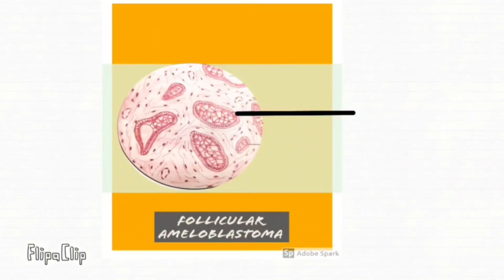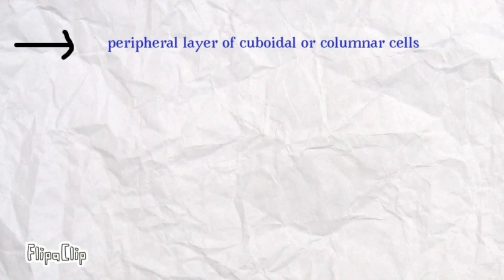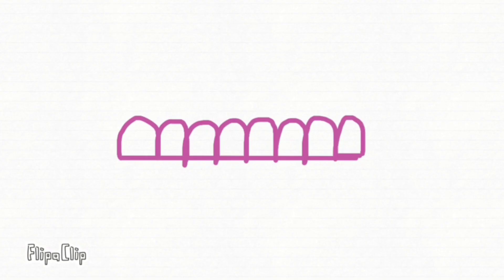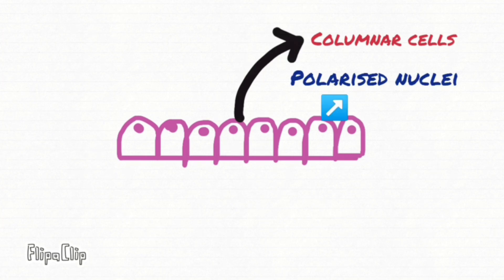In follicular type of ameloblastoma, the tumor cells are arranged as islets of cellular masses. These islets are bound at the periphery by cuboidal or columnar cells. The cuboidal or columnar cells have well-polarized nuclei — that is, their nuclei are placed away from the basement membrane, as you can see in the figure.